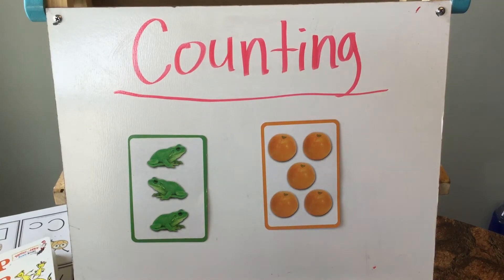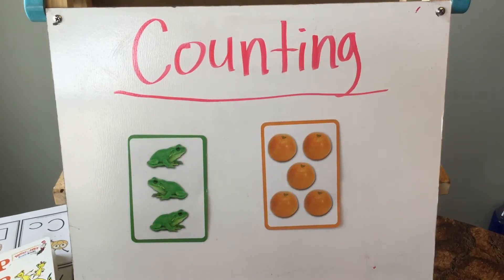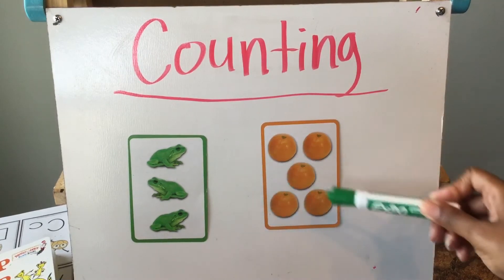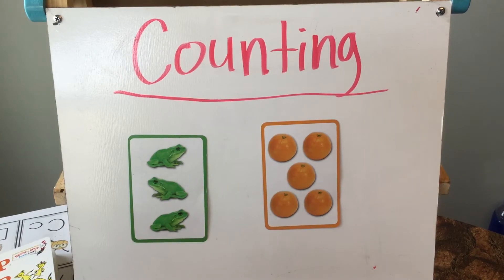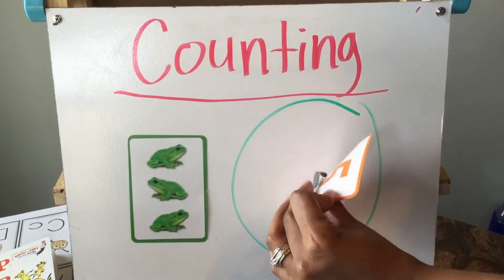Okay, now we're going to work on counting objects. Let's look at these frogs — how many frogs do we have? One, two, three — three frogs. How many oranges do we have? One, two, three, four, five. Now, which one has the most? Very good — the oranges have the most.